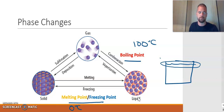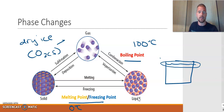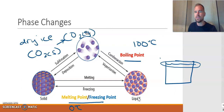Now it is possible to go directly from a solid to a gas — and vice versa — without passing through the liquid phase. These phase changes are known as sublimation, from solid directly to gas, or deposition, going directly from gas to solid. An example is dry ice, which is solid carbon dioxide. When solid carbon dioxide goes to the gas phase, that is sublimation. If the carbon dioxide gas were to go back to solid dry ice, that would be deposition. We'll talk about how this happens in a later topic.